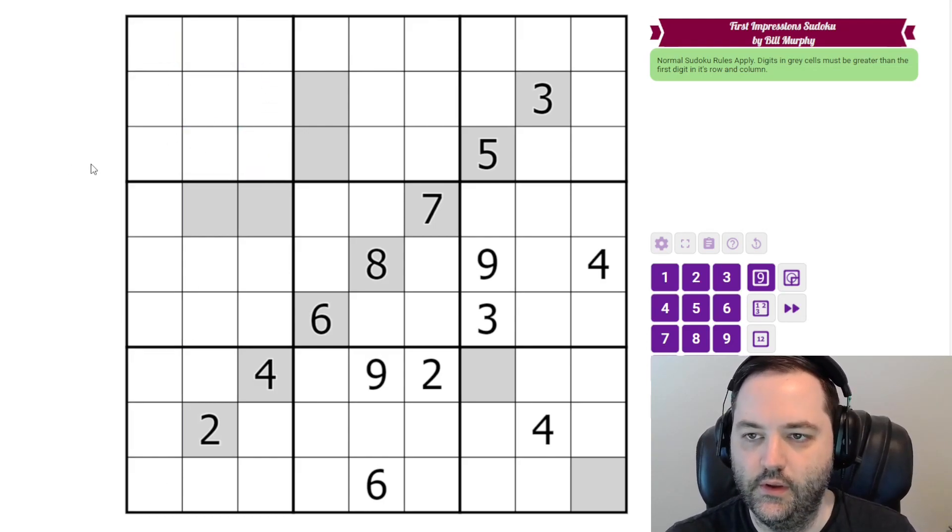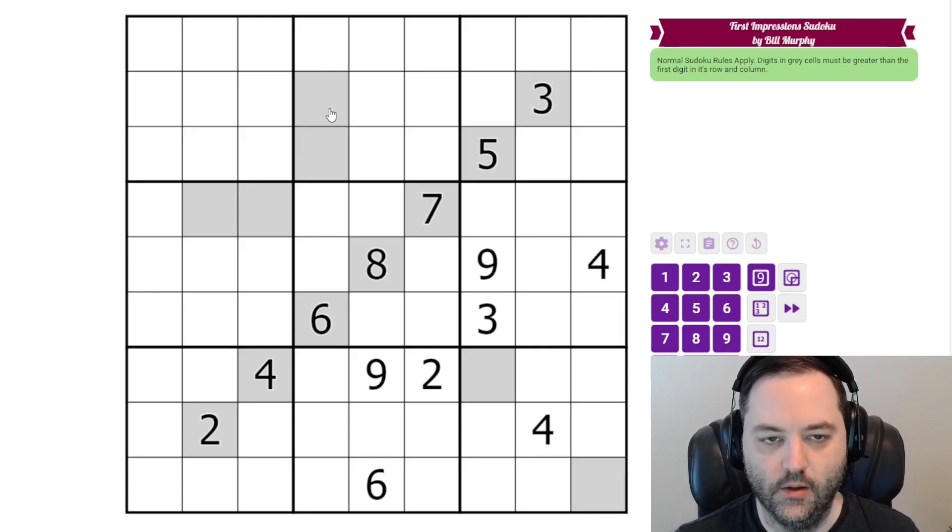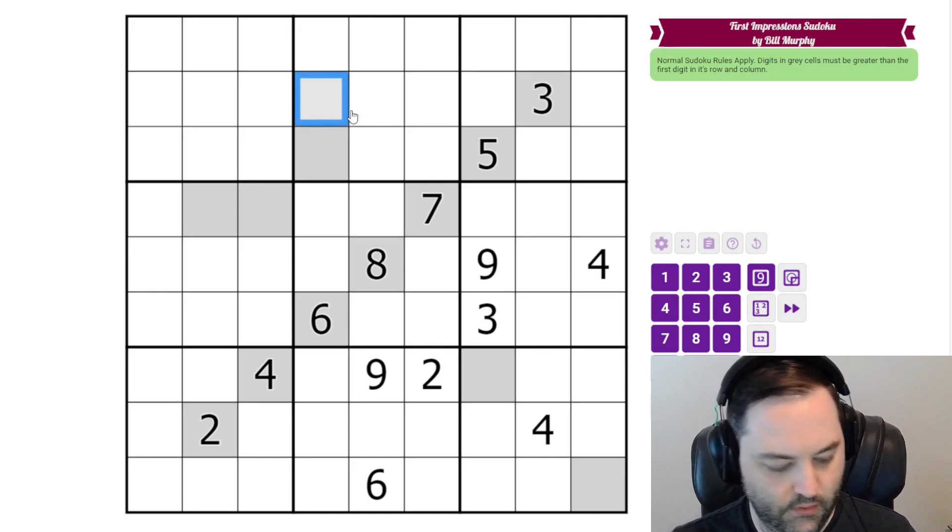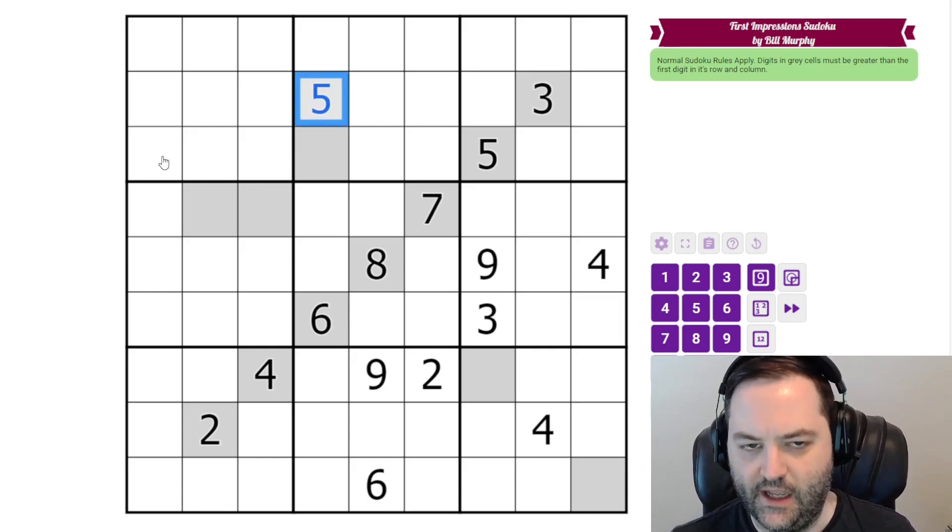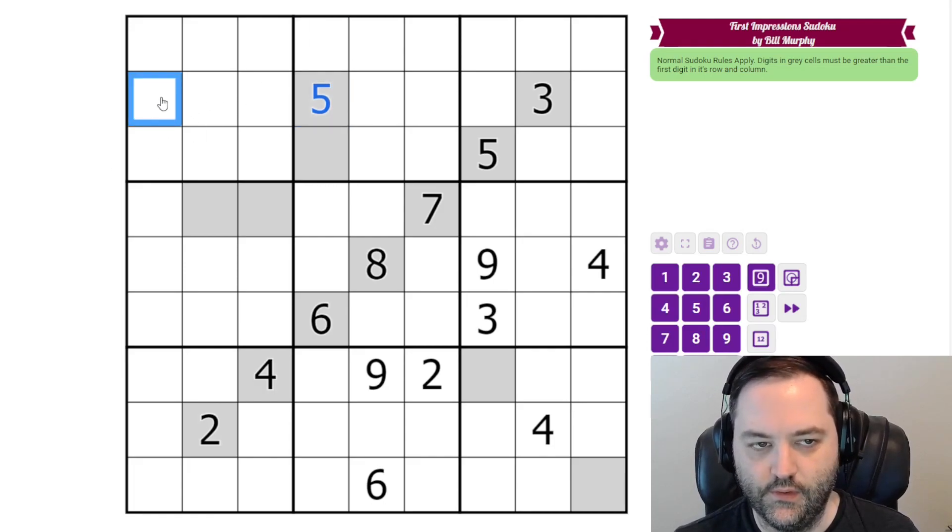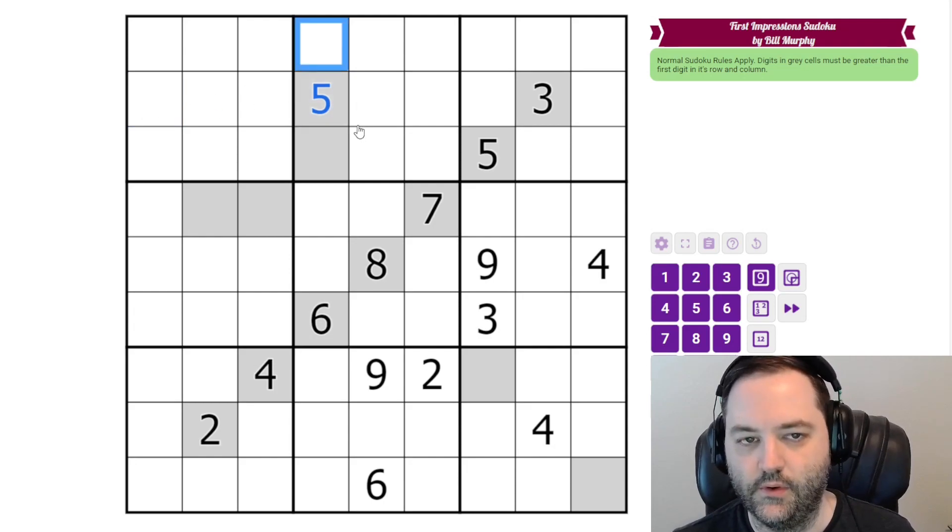Additionally, this is the first impressions rule. Digits in gray cells must be greater than the first digit in its row and column. So taking this as an example, let's say it's a 5. The digits in these cells, so this is the first cell in the row with the 5, this is the first cell in the column.